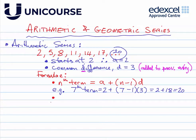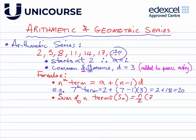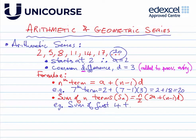Now let's look at the sum of n terms. We write that as S-subscript-n, and the formula is: n over two, times the quantity two-a plus n minus one lots of d. Let's look at an example — the sum of the first four terms.